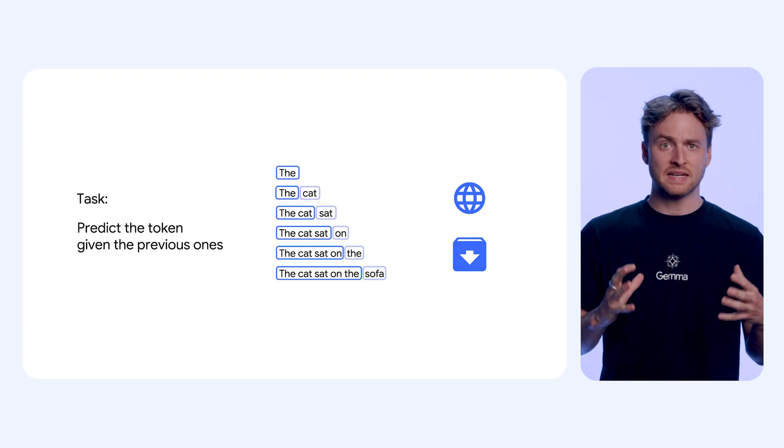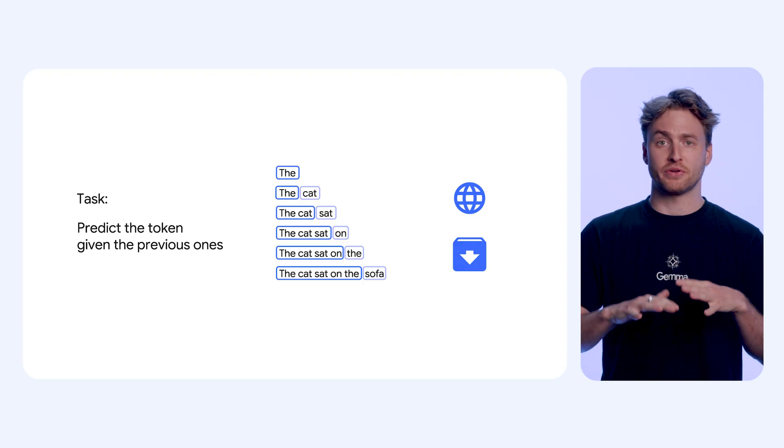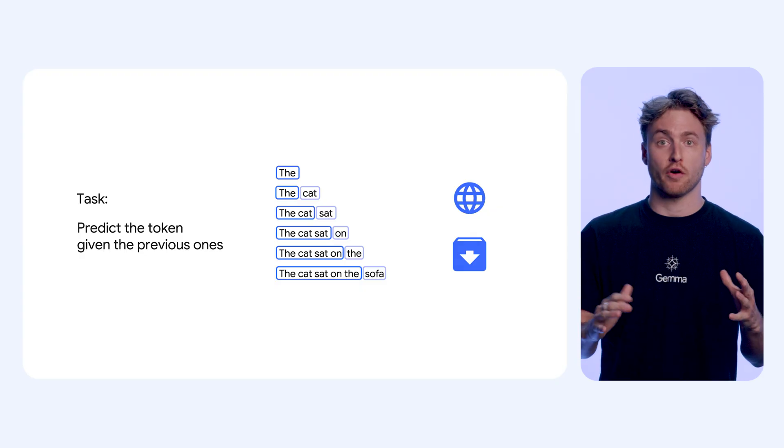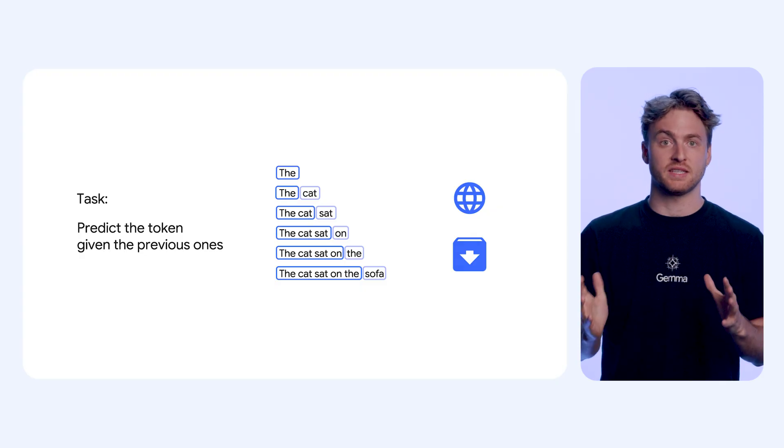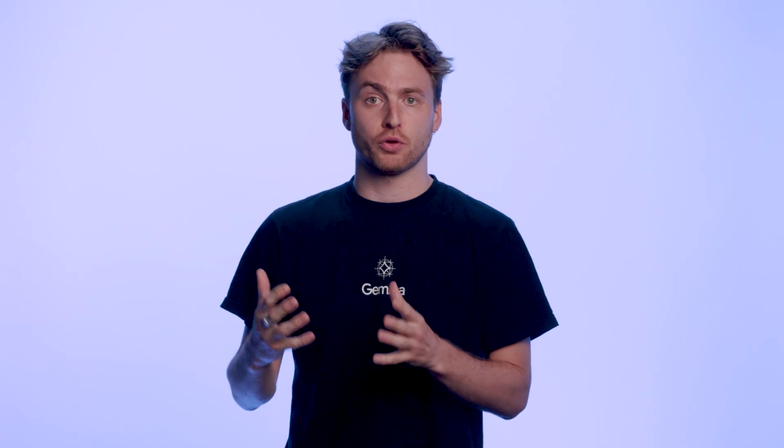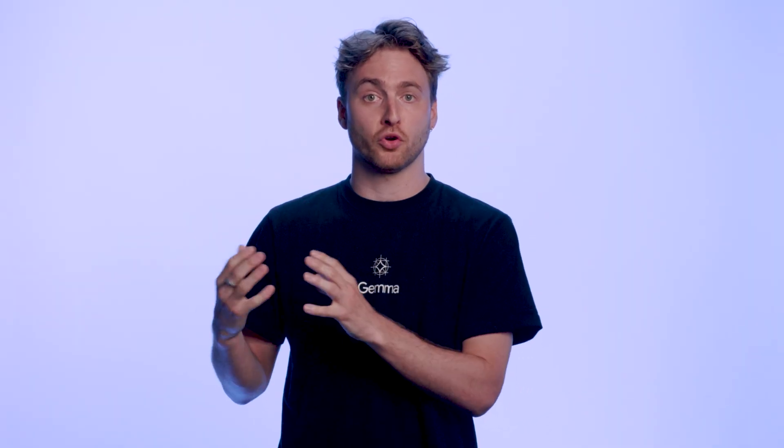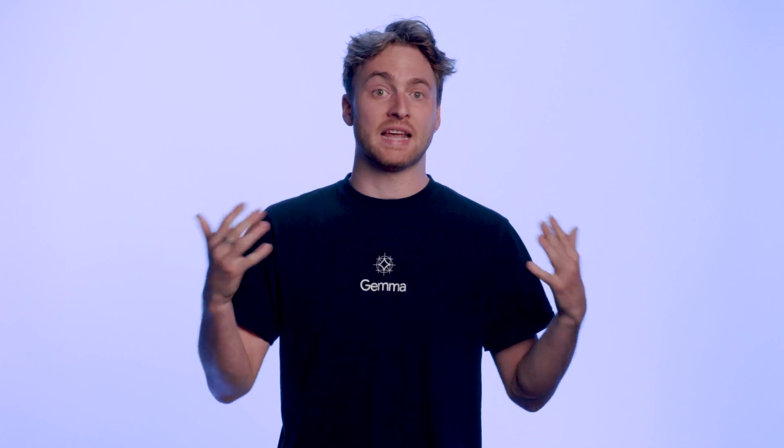It implicitly learns representations of the knowledge it is given. Once trained, the model is a next token predictor. Given a piece of text, it will output the next most probable token given everything it has seen during its training.